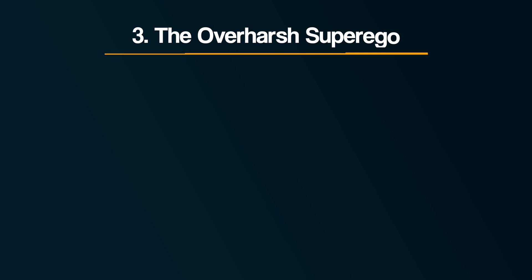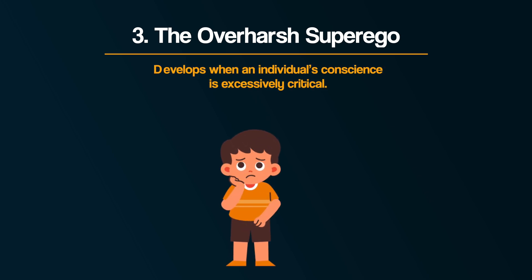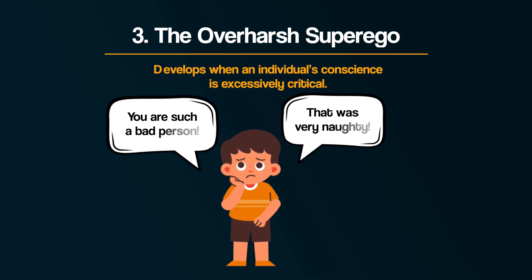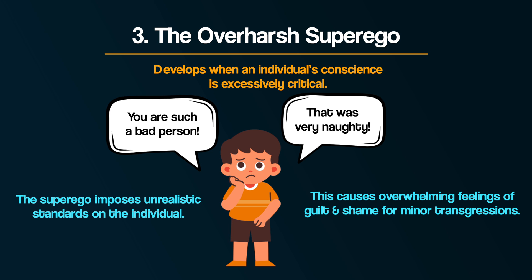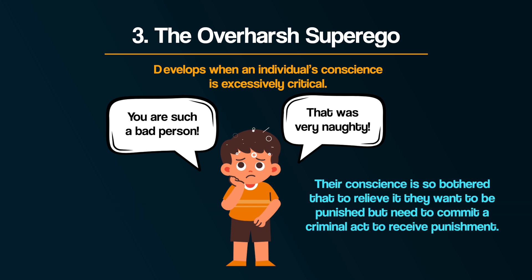The over-harsh superego occurs when an individual's conscience is excessively critical. In such cases, the superego imposes unrealistic or overly rigid standards on the individual, causing overwhelming feelings of guilt and shame for minor transgressions. In other words, their conscience is so troubled that to relieve it, they want to be punished, but need to commit a criminal act in order to receive that punishment.